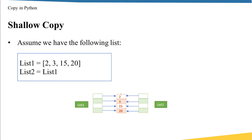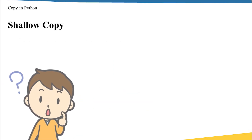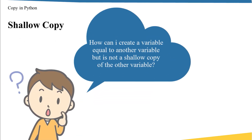In other words, if I change the values using the list1 variable name, the values that list2 points to will change also, and vice versa. This is known as shallow copy, which means when I assign one variable to another, I'm not creating a new standalone variable — I am creating a reference to the same values in the memory. The question that rises in your mind now: how can I create a variable equal to another, but not a shallow copy of it?